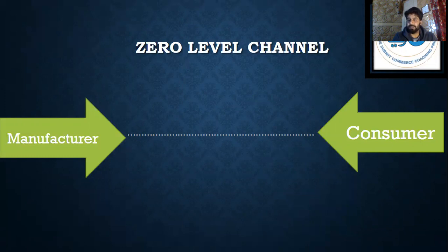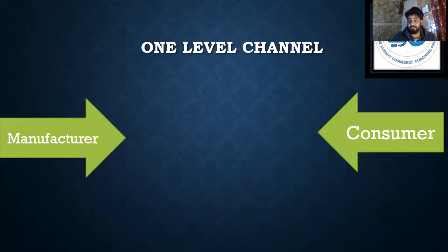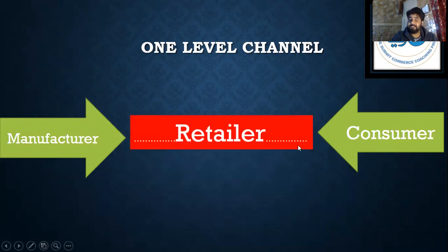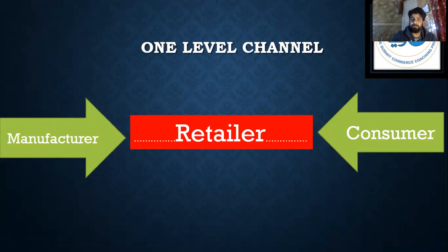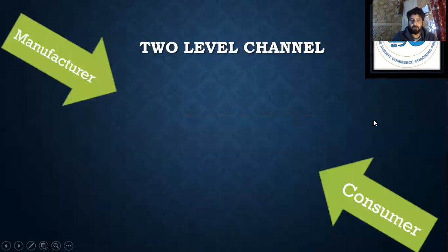This type of channel distribution is zero level channel. The second type is one level channel. In a one level channel, there is one person between the manufacturer and consumer. The manufacturer sends goods to a retailer — meaning a shopkeeper — and the shopkeeper sells to the consumer.